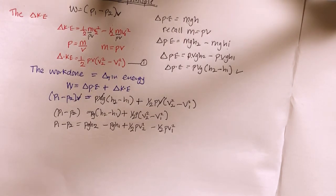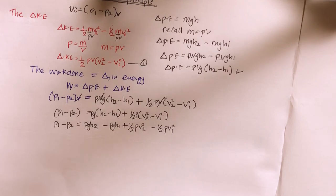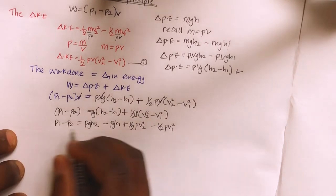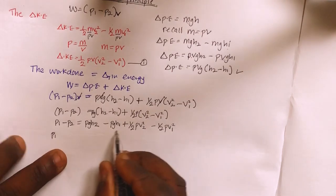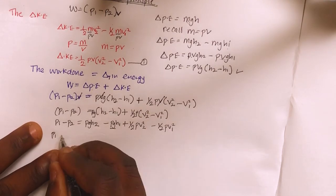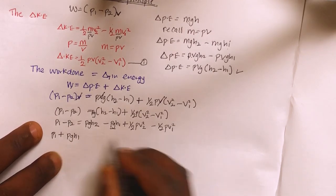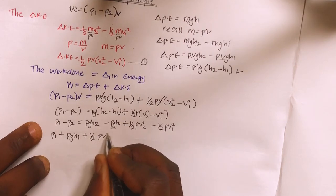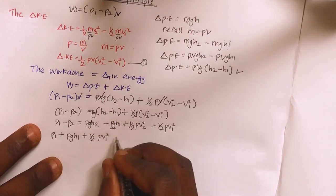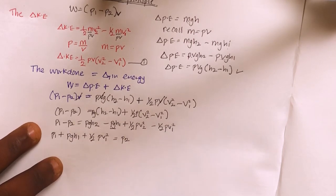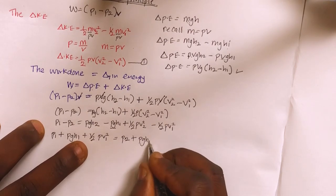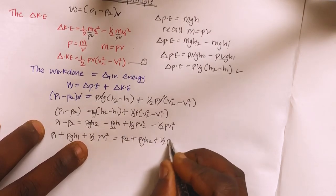We've already proved the Bernoulli equation, but let's rearrange it into its standard constant form. Collecting like terms so that all terms at position one are on one side and all terms at position two are on the other: p1 plus ρgh1 plus one-half ρv1 squared equals p2 plus ρgh2 plus one-half ρv2 squared.